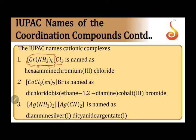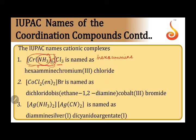As we know, the cationic part has to be written first. When we write a coordination sphere, we should first write the names of all the ligands followed by the central metal. Here we have ammonia ligand, which is a neutral ligand, and it is called ammine. We have hexaammine — six ligands of ammonia — and there is no other ligand present here.